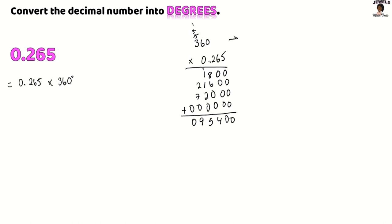So again, we're going back and counting how many digits are behind our decimal point. In 360, there are 0 digits. In 0.265, there are 3 digits. So in total, we would have 3 digits behind our decimal point. So we'll count 1, 2, 3 and input our decimal point. So my 0.265 in degrees is 95.4 degrees.